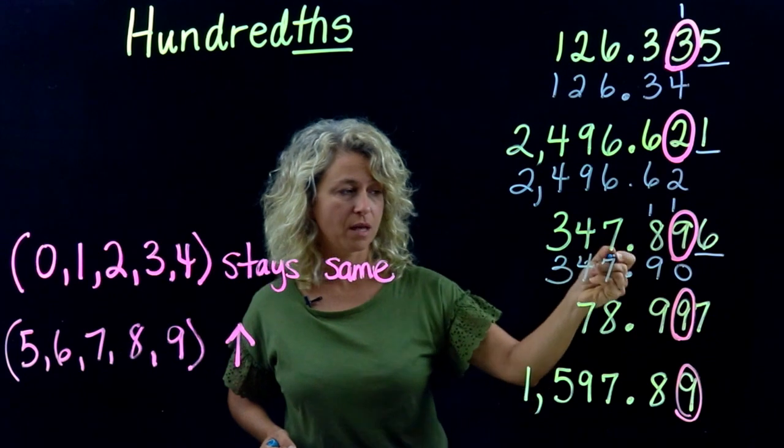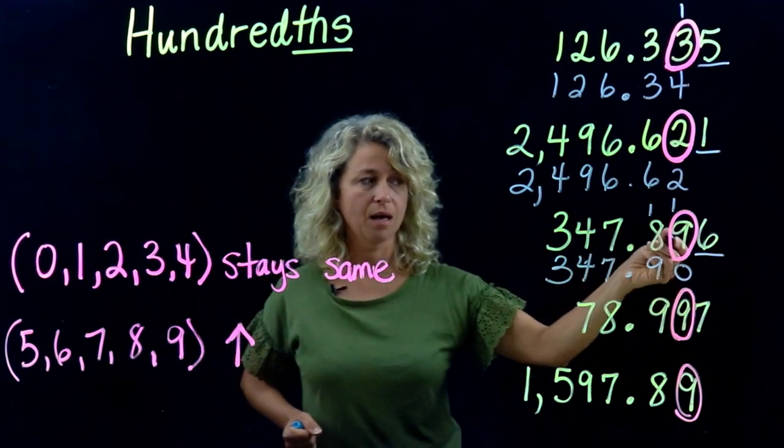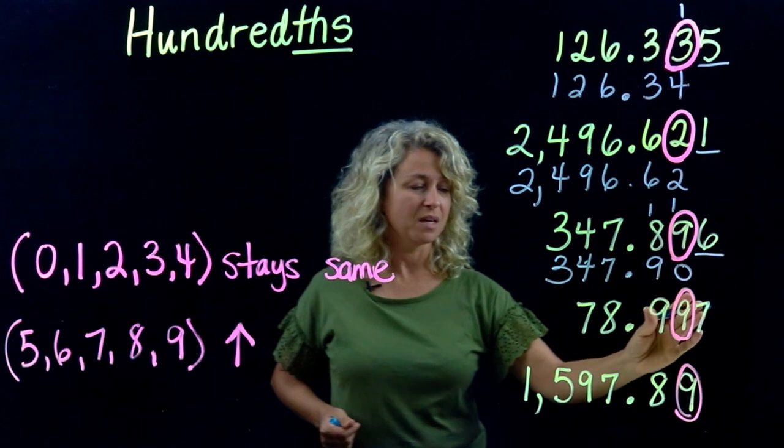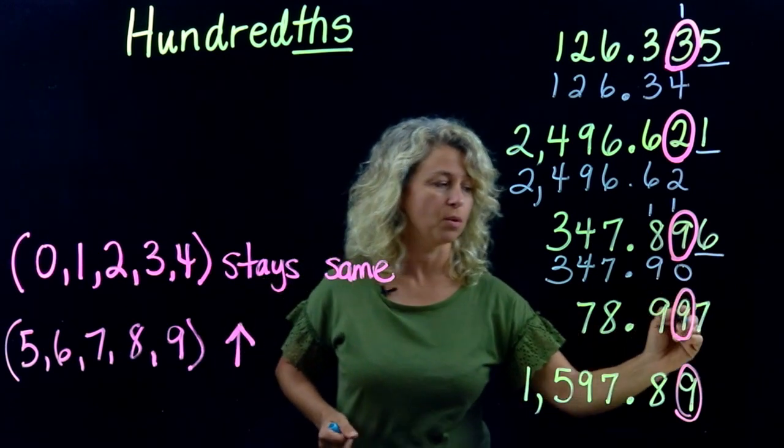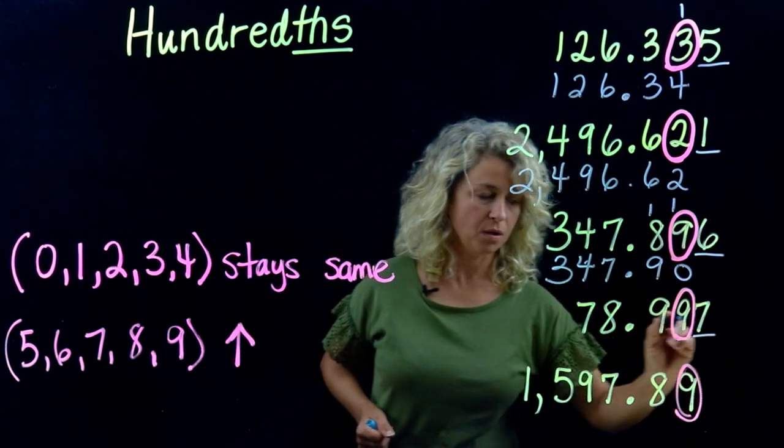Three hundred forty-seven and ninety hundredths. Okay, now let's look at this next example. Underline the one to the right.